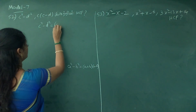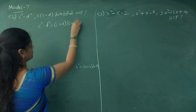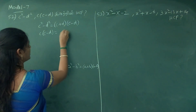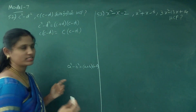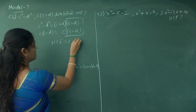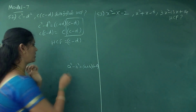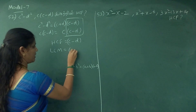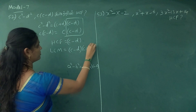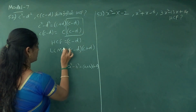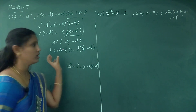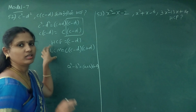c plus d into c minus d — this is the answer. You can factor c into c minus d. HCF is equal to c minus d. So c minus d, c plus d — the HCF is c minus d.